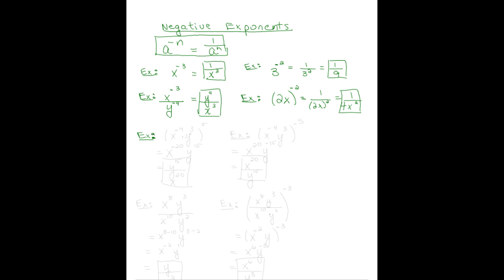We can apply the rules as usual and deal with the negatives at the end. For example, x to the negative 4y cubed, all raised to the 5th power. By powers, by exponent rules, we get x to the negative 20th, y to the 15th.